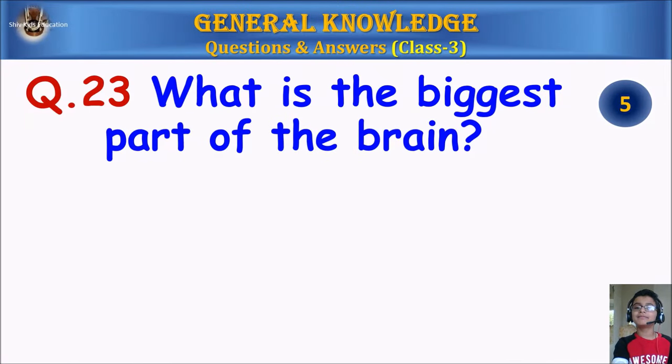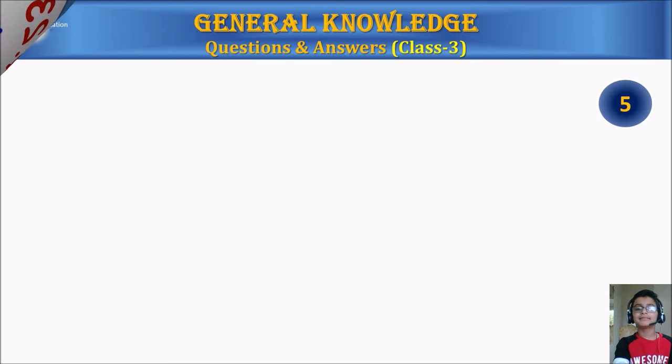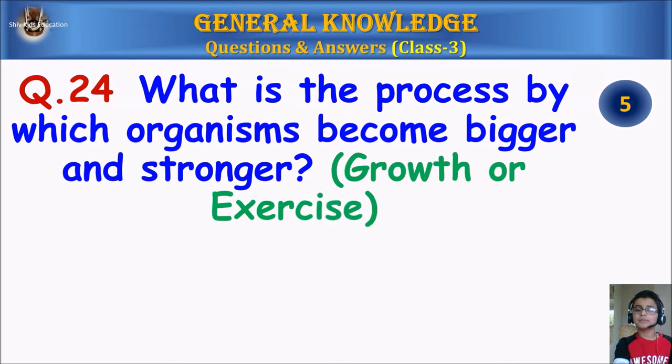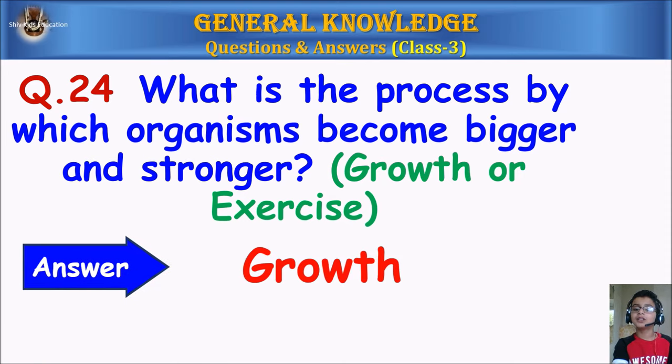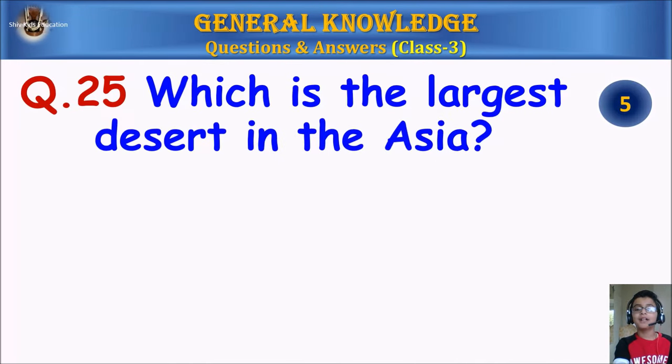Question 23: What is the biggest part of the brain? Your time starts. Answer: Cerebrum. Question 24: What is the process by which organisms become bigger and stronger, growth or exercise? Your time starts. Answer: Growth.